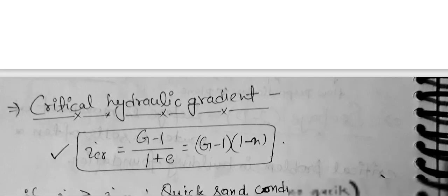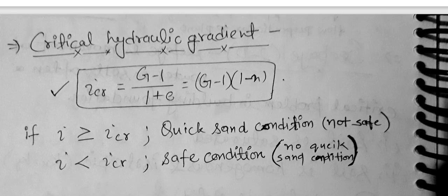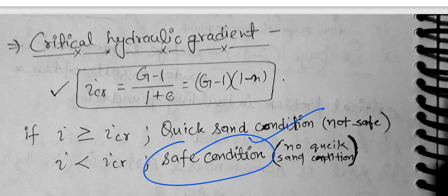The critical hydraulic gradient formula is I_critical = (G − 1)/(1 + E), also expressible as (G − 1)(1 − N) in terms of porosity. For quicksand condition, the applied hydraulic gradient is greater than the critical hydraulic gradient. If it is less than the critical gradient, it is a safe condition. For example, in an earth dam, if the hydraulic gradient is less than critical, it is safe; if greater, it is unsafe.